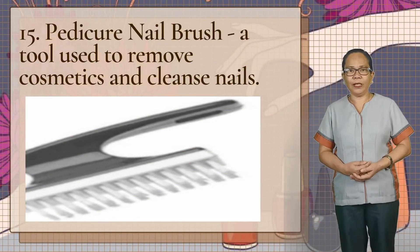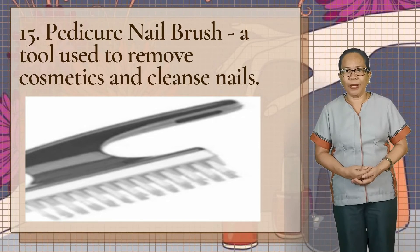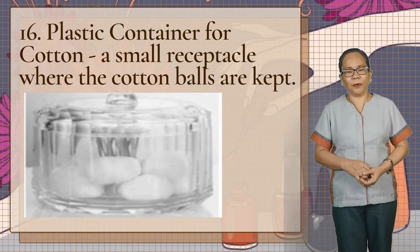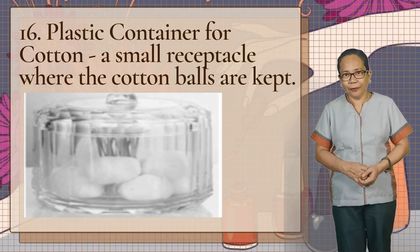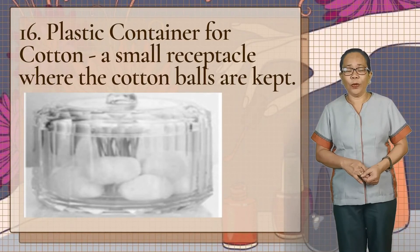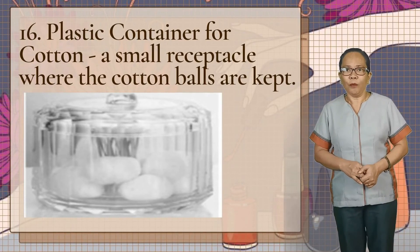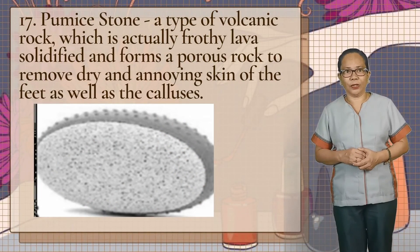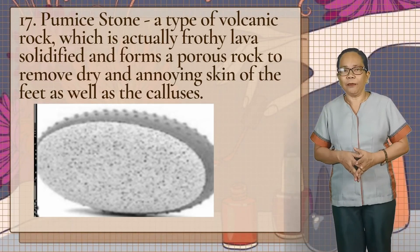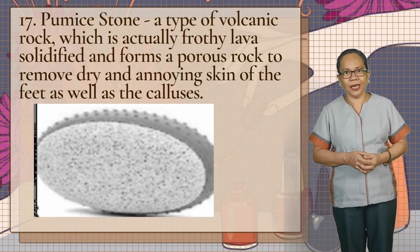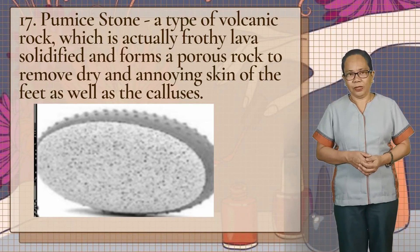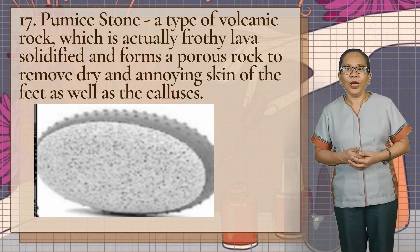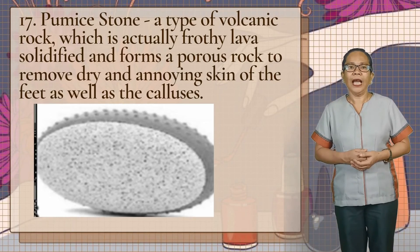Next we have the pedicure nail brush, a tool used to remove cosmetics and cleanse nails. Next we have the plastic container for the cotton — from the picture itself, it says that it is where you are going to keep the cotton balls. Next we have the pumice stone, a type of volcanic rock which is actually fruity lava solidified and forms a porous rock, used to remove dry and dying skin of the feet as well as the calluses — o simply, ang tawag nila dito ng sila nanay ay bato, pero ito ay pangtanggal din ng mga kalyuses.